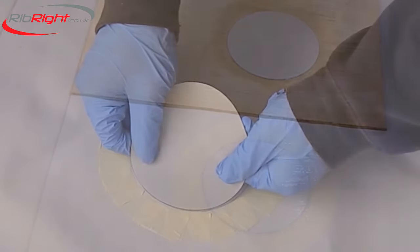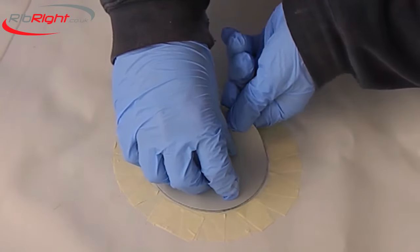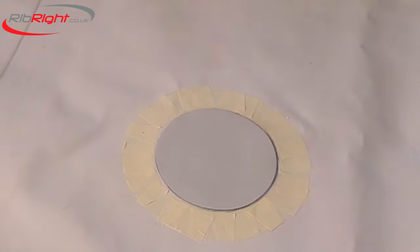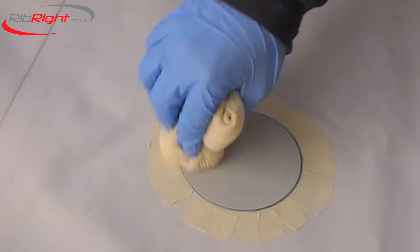To apply the patch, roll it on from one side to the other. Take care to ensure that no air bubbles are trapped between the patch and the boat. You can use a damp solvent cloth to aid with this.